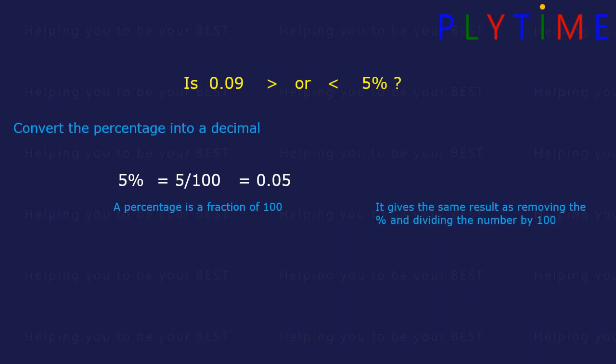It gives the same result as removing the percentage sign and dividing the number by 100. So 5 divided by 100 — to divide by 100, we move the digits 2 places to the right. It's 0.05. Now we can compare them: 0.09 is greater than 0.05, so we can say 0.09 is greater than 5%.